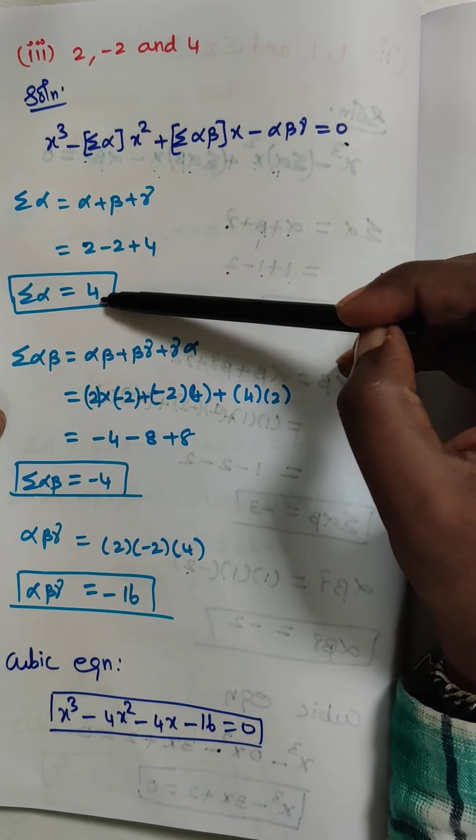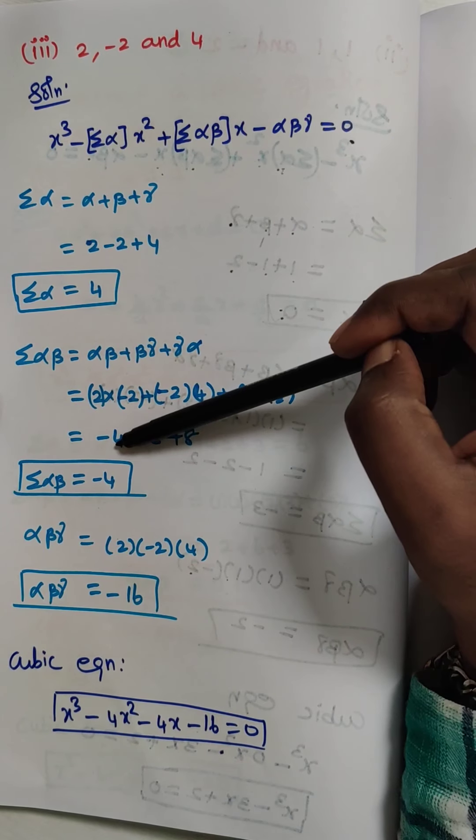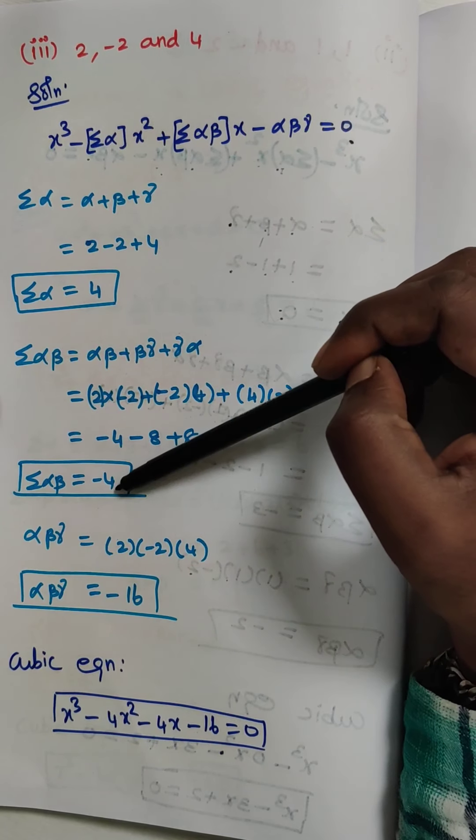The next one: summation alpha beta = αβ + βγ + γα, with α = 2, β = −2, γ = 4: 2×(−2) = −4, (−2)×4 = −8, 4×2 = 8. So −4 + (−8 + 8) = −4. Summation alpha beta equals −4.